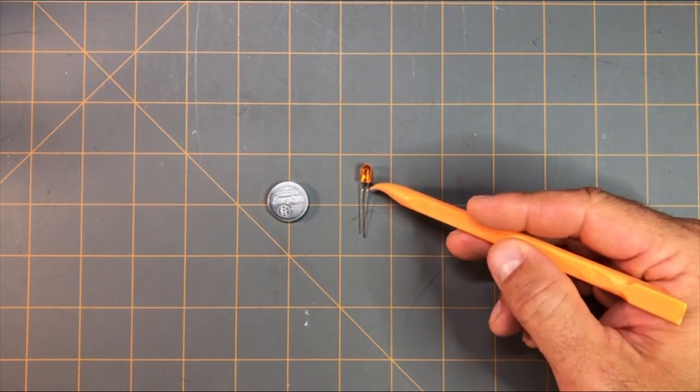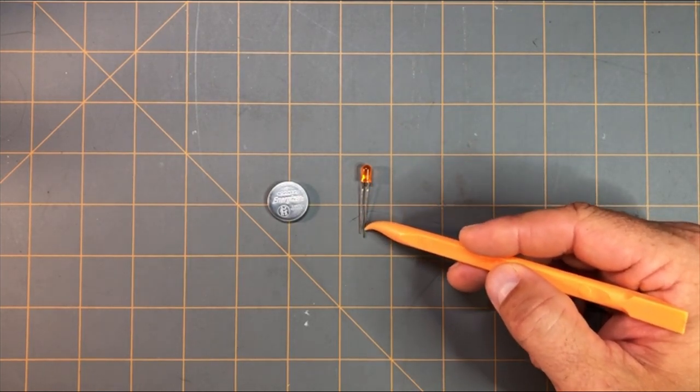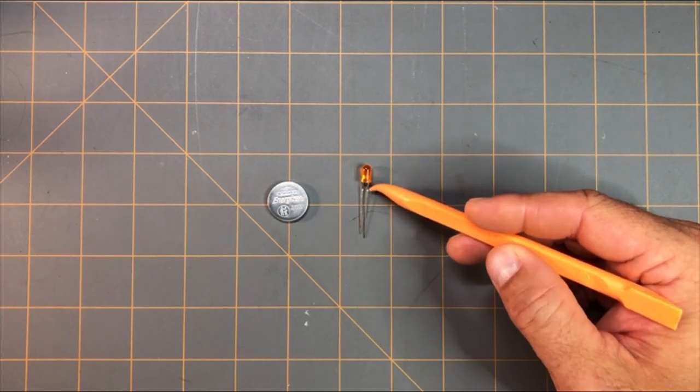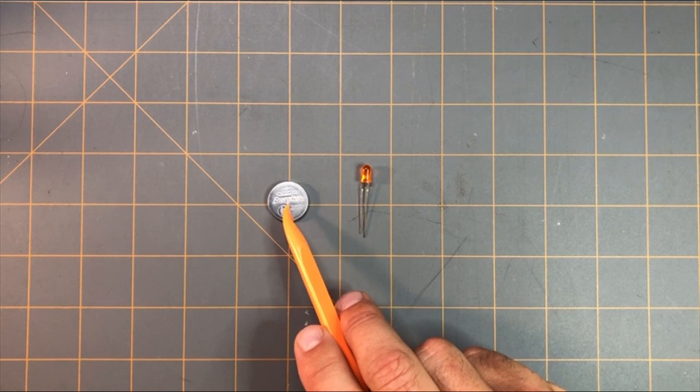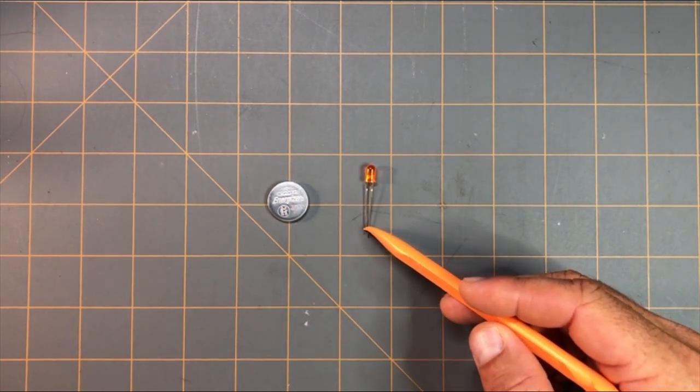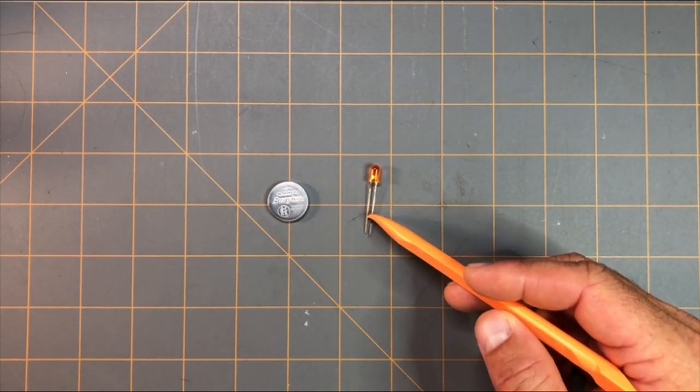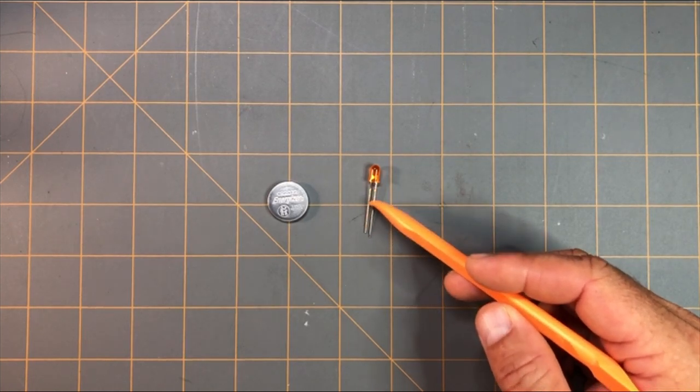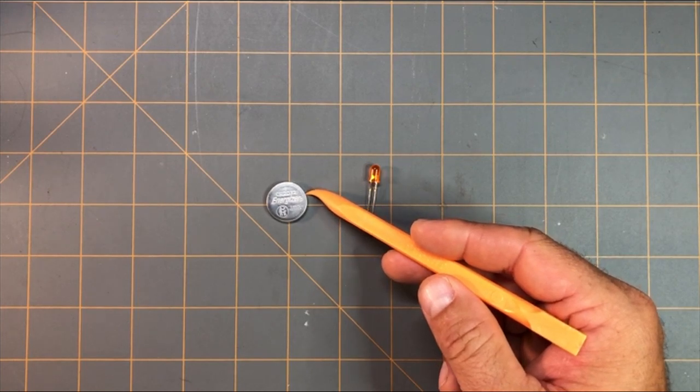All we need to do is take the positive leg, or the anode, which is the longer leg of the LED, and touch it to the positive side of the coin cell battery. Then touch the cathode, the negative leg or the shorter leg of the LED, to the negative side of the battery.